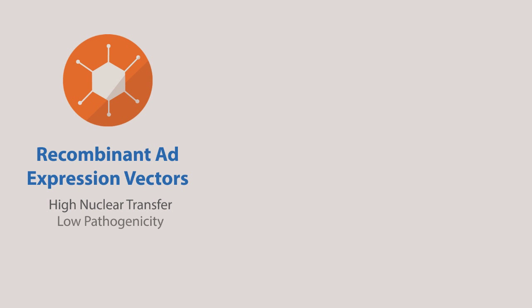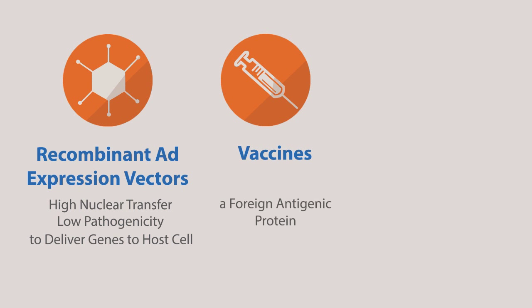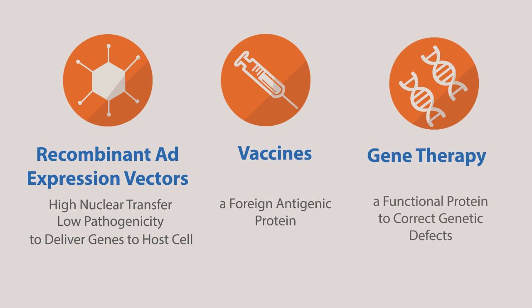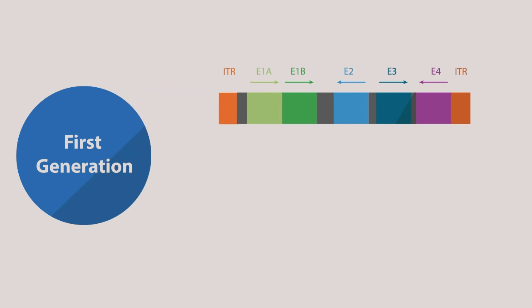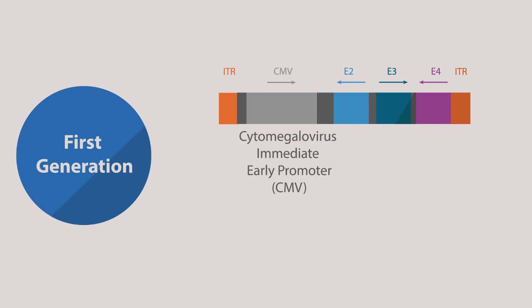Recombinant AD expression vectors exploit the high nuclear transfer efficiency and the low pathogenicity of the virus to deliver genes to a host cell. Adenovirus vectors can be used in vaccines where the vector expresses a foreign antigenic protein, or in gene therapy where the vector expresses a functional protein to correct a genetic defect. For the first generation vectors, the E1 gene region is replaced by the transgene or therapeutic gene to be delivered to a target cell with a high activity promoter, such as the cytomegalovirus immediate early promoter. In order to propagate the recombinant virus that lacks E1, a complementing producer line such as HEK293 or PERC6 is required.